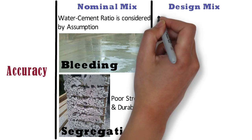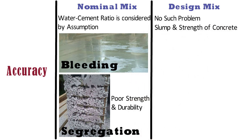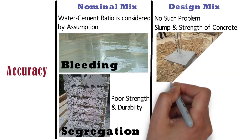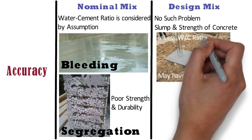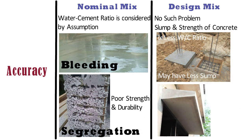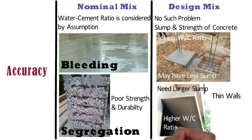In case of design mix, there is no such problem. Slump and strength can be related — for a given strength, different slump values can be achieved by changing the water-cement ratio with or without admixtures to suit concreting of different elements. For example, for footing it may have less slump, i.e. lower water-cement ratio, but for thin elements like chajja or thin walls it may need a larger slump, i.e. a higher water-cement ratio or more admixtures. This flexibility is not possible in nominal mix.